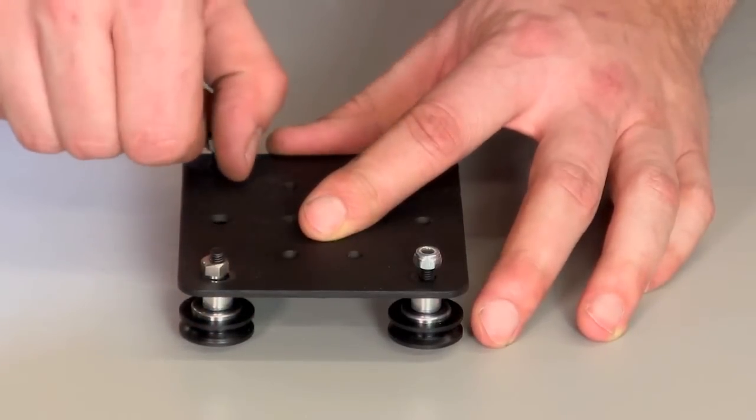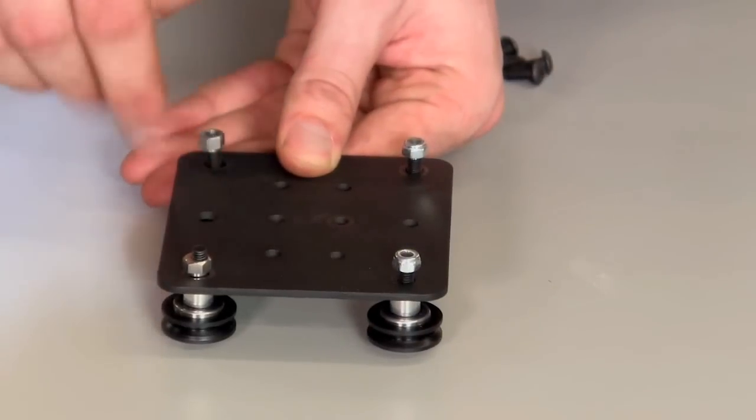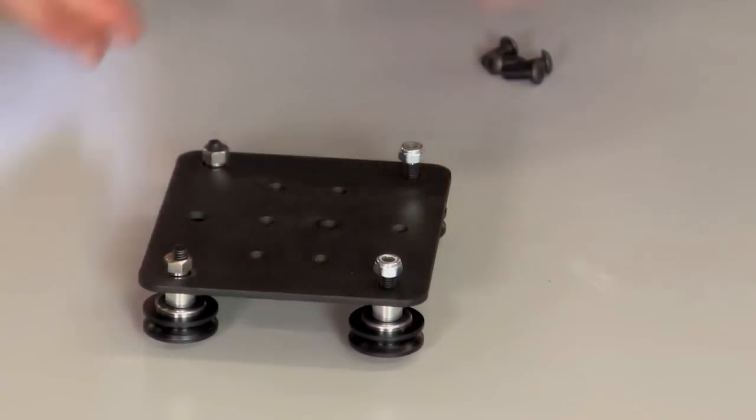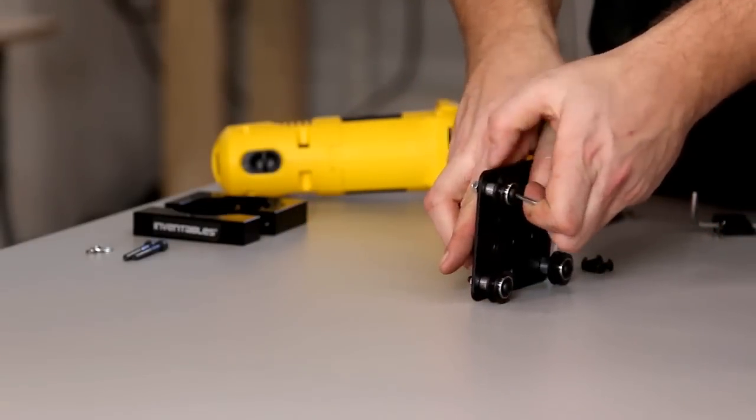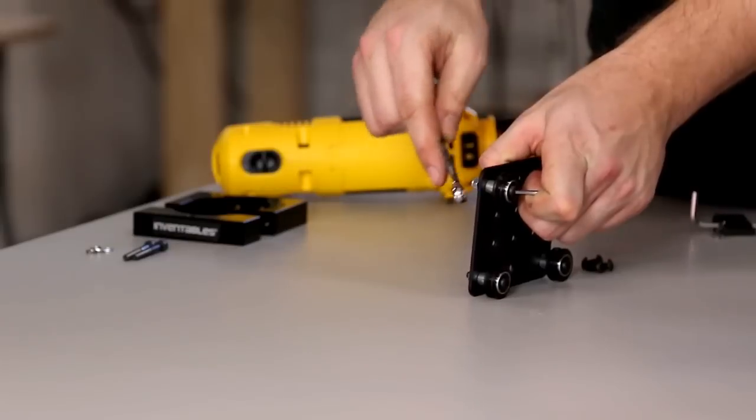When you thread on the eccentric nut, make sure that the shoulder is facing the plate so that it can be seated in the larger hole. Tighten all of these connections, again making sure that the shoulder of the eccentric nut is seated in the larger hole.